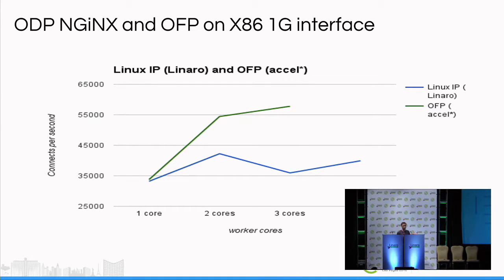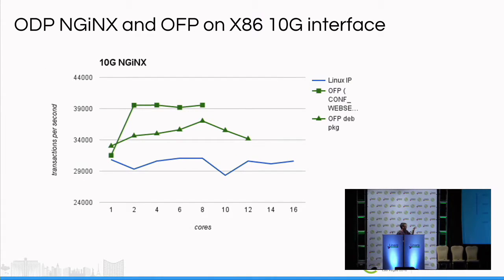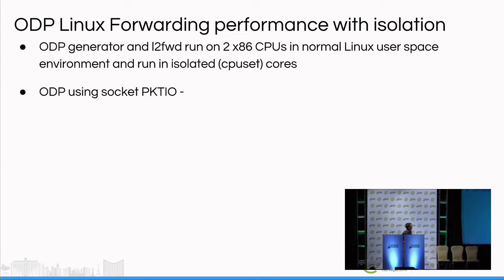These are preliminary numbers. Last night I ran some tests on the Linux IP stack — because what do you do in Vegas at night? — and I have to say it now looks much better for the Linux IP stack. It's performing better with the number of cores. It's still not quite as good as OpenFastPath, but at least it's scaling with the number of cores.